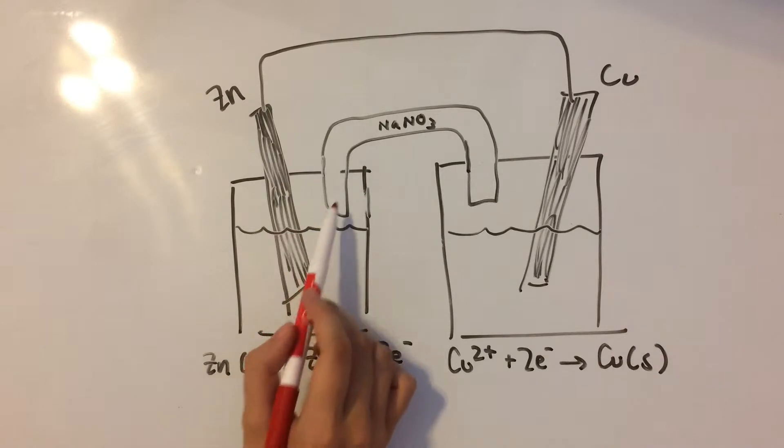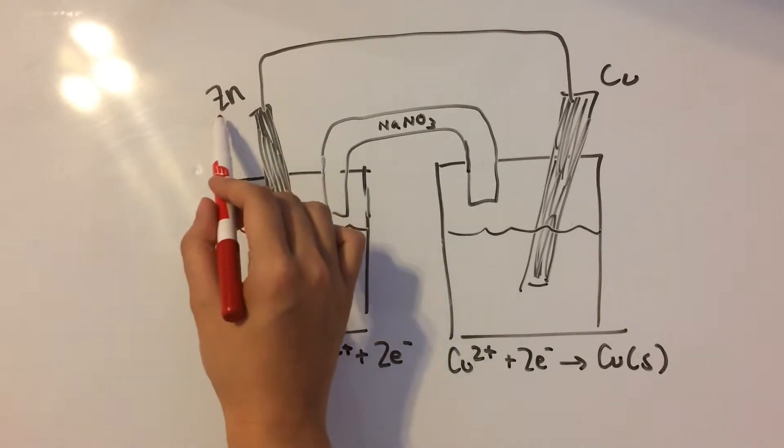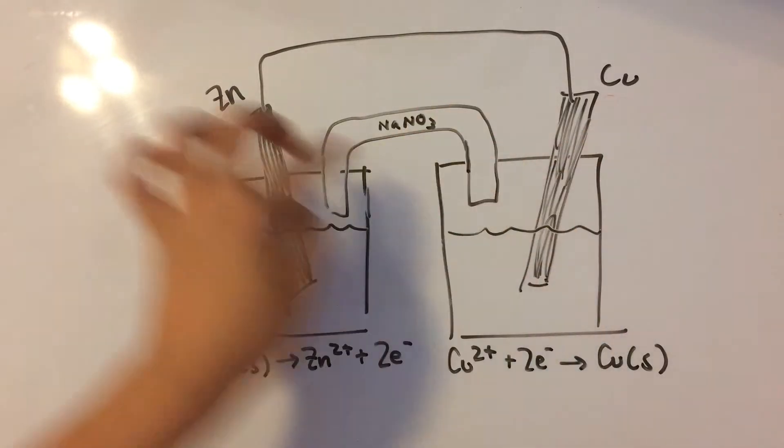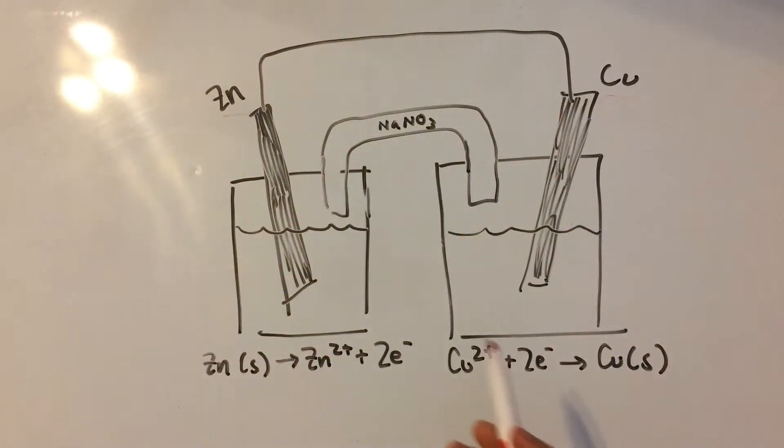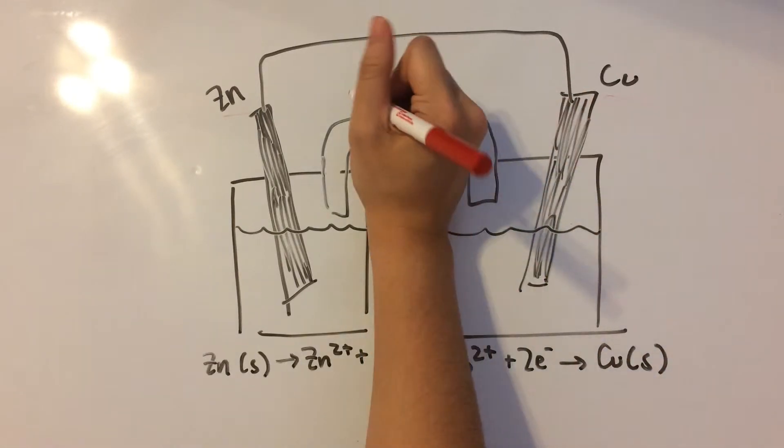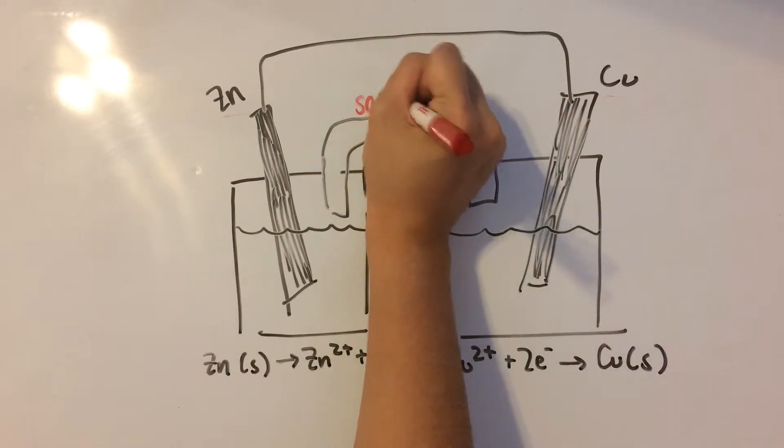So here we have a galvanic cell with zinc and copper. These are the strips of metal, and they're going to be connected by a wire. In the middle here, where it says NaNO3, is what we call a salt bridge.